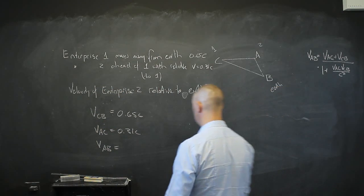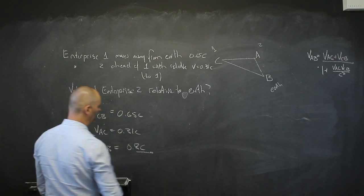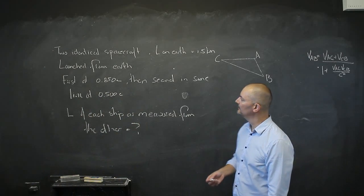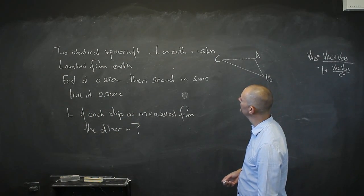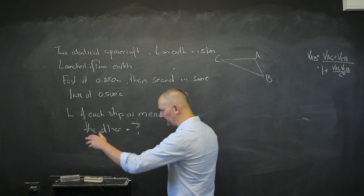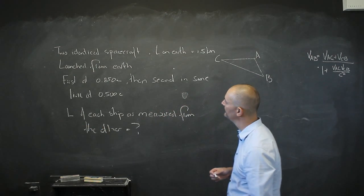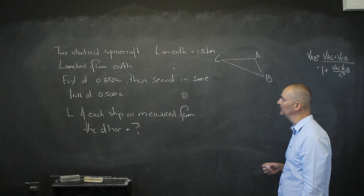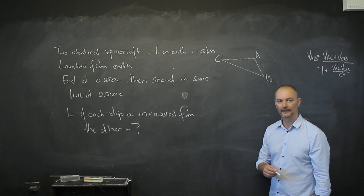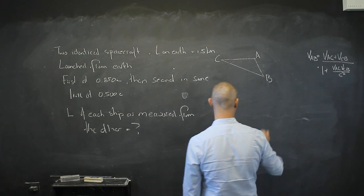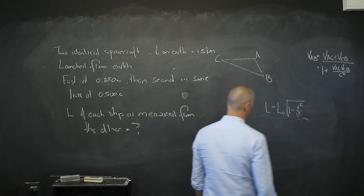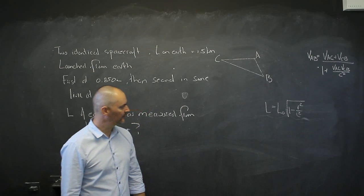Plugging those in, I get VAB = 0.8c. Now for a more interesting problem: we are building two identical spacecraft which, as measured on Earth, are each 1.5 kilometers in length. Both are launched in the same direction — the first at 0.85c, followed by the second at 0.50c. What is the length of each ship as measured from the other? The first thing that comes to mind is length contraction: L = L₀ × √(1 − v²/c²).